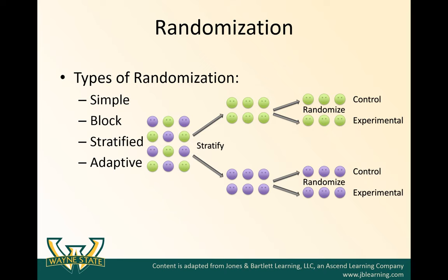Stratified randomization tries to help control the balance of baseline characteristics. Here you take your study sample and stratify on some variable you'd like to balance — for example, green versus purple faces, which could represent males versus females or young versus old. Within these stratified groups, you then randomize them to control and experimental groups, so that in the end you have an equal number of each subgroup in both the control and the experimental groups.